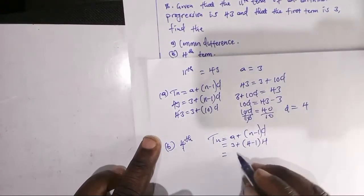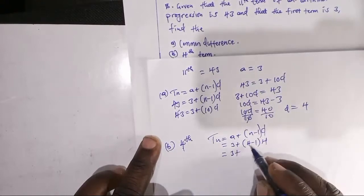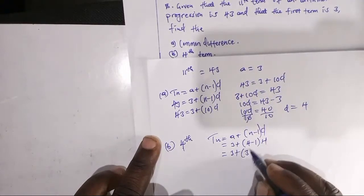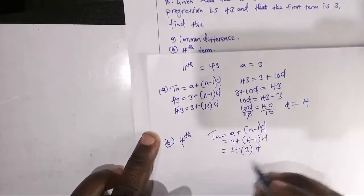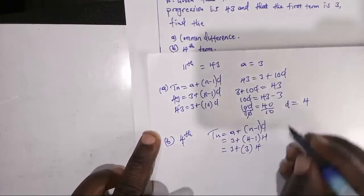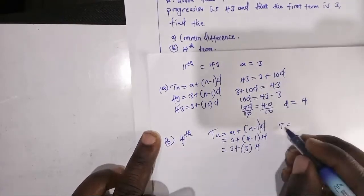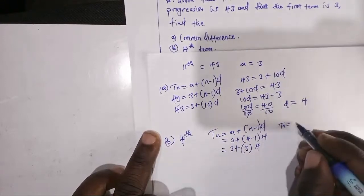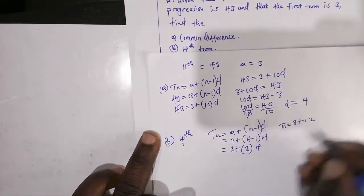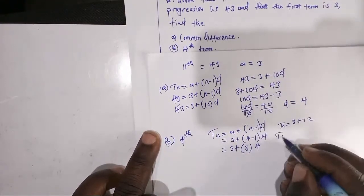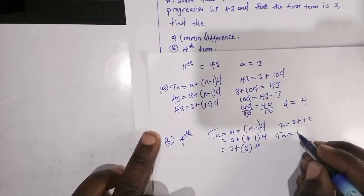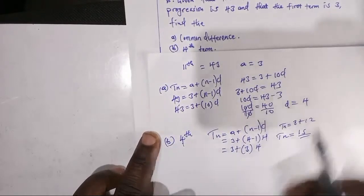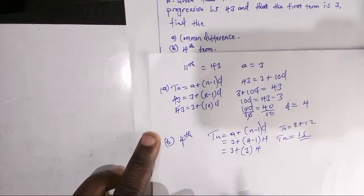That gives us 3 plus, where 4 minus 1 is 3, then multiplied by 4. So T_N equals 3 plus 4 times 3, which is 12, so it will be 3 plus 12, giving T_4 equals 15. This is the 4th term in this arithmetic progression.